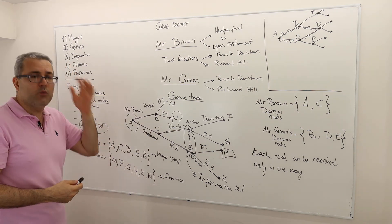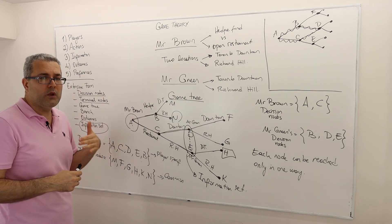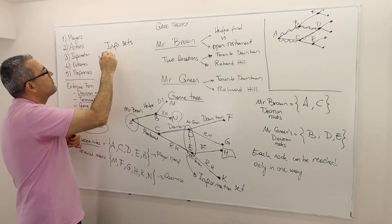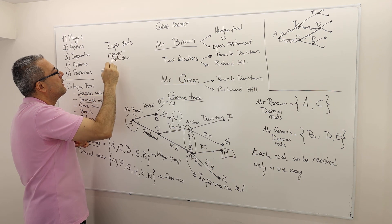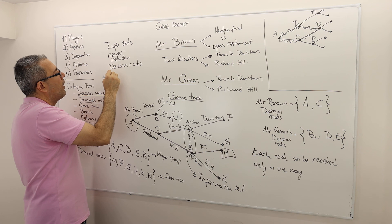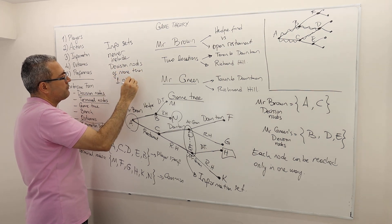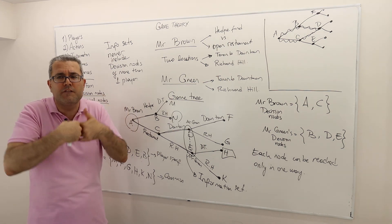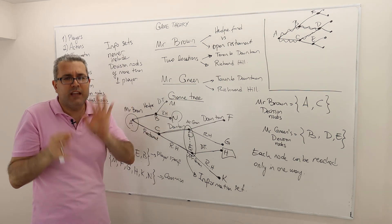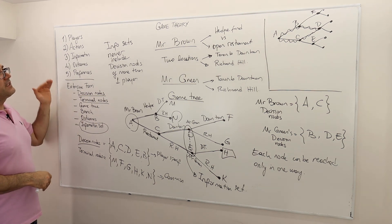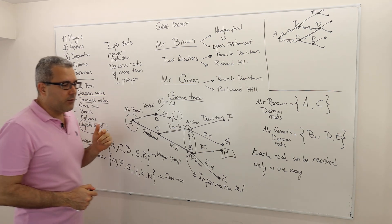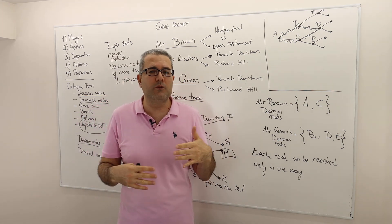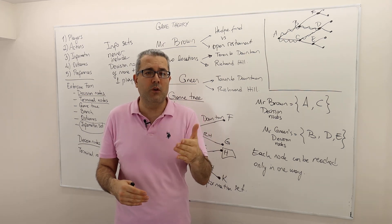One crucial rule: an information set never includes decision nodes of more than one player. An info set is mine versus yours — we cannot have a joint information set in a game tree. In the next episode, I'll draw some hypothetical game trees and explain what they mean.